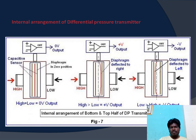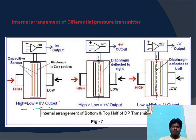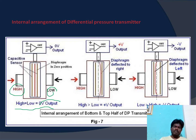There are three different cases we will look at internally in the differential pressure transmitter. In the first condition, when the high pressure and the low pressure are equal, the output will be zero volts. When both terminals have the same pressure, there is no deflection of the diaphragm and therefore no change in capacitance. Since capacitance is directly proportional to the output, the output voltage is zero.